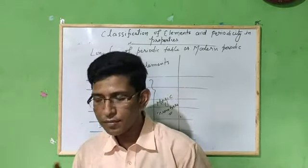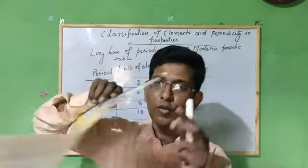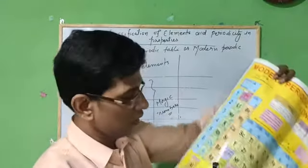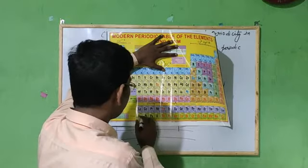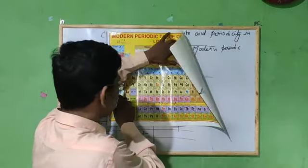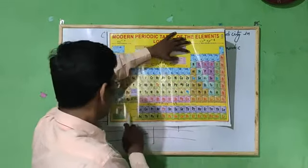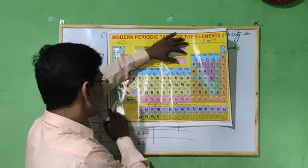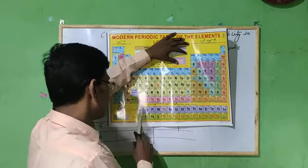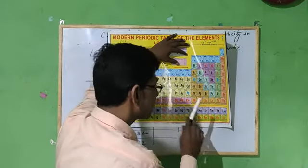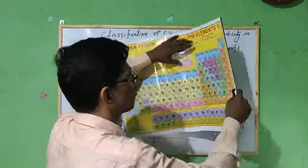You can also see one more important thing. In period number six, after atomic number 56, atomic number 57 starts a series placed at the bottom — that is the lanthanide series. And in period number seven, after atomic number 88, there is another series — that is the actinide series. So lanthanides belong to period number six and actinides belong to period number seven.